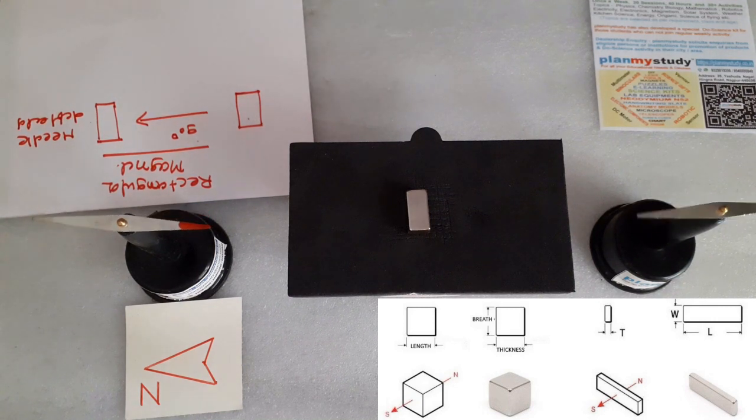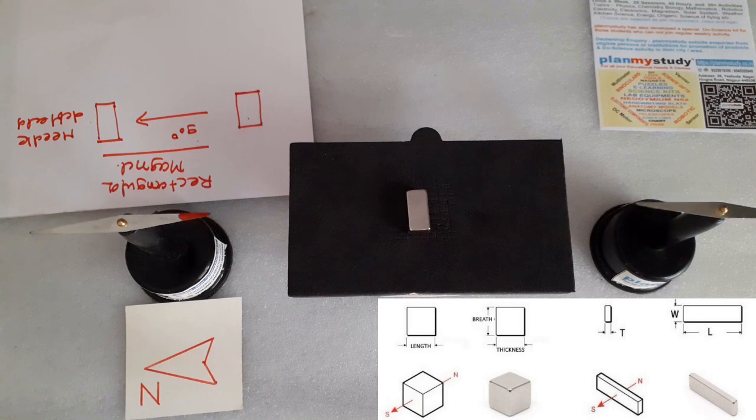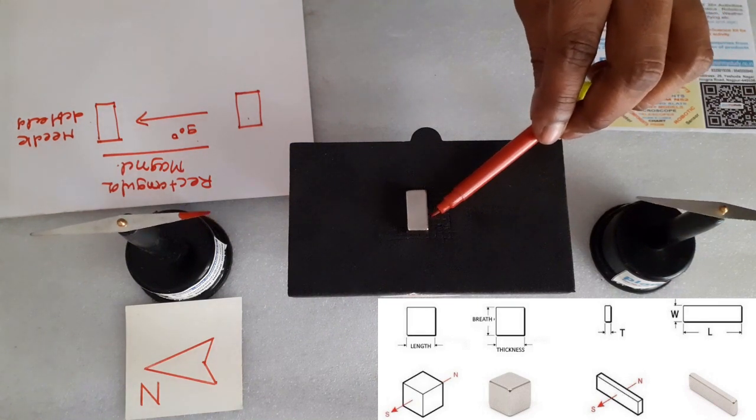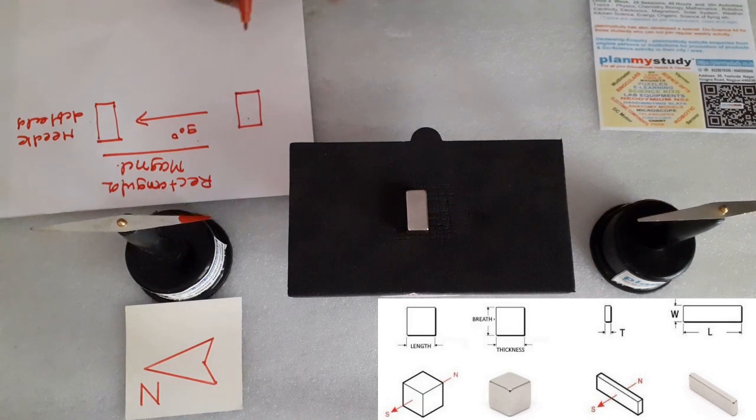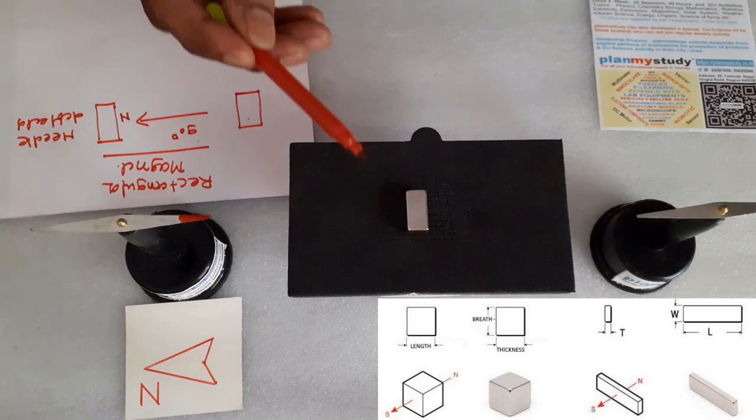You can see this. Here needle is deflected. It means this side which I am showing with the pin is north side of the magnet and this side is south of the magnet.